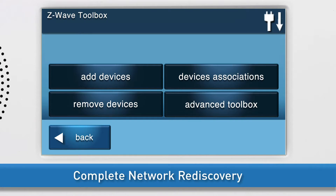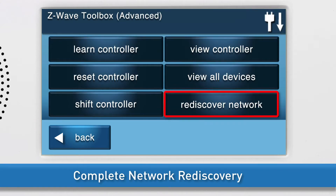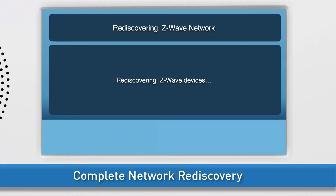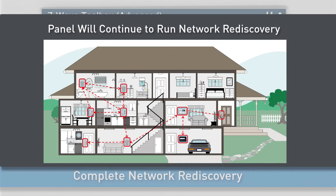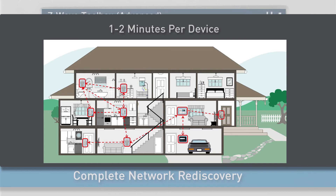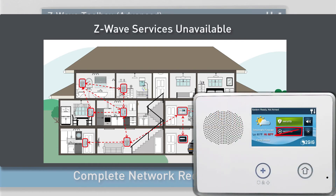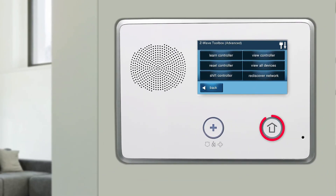To initiate a network rediscovery, navigate to the Z-Wave Toolbox, then press Advanced Toolbox. Press Rediscover Network. The panel will display a message that it is rediscovering the Z-Wave devices, then the panel will automatically redirect you back to the Advanced Z-Wave Toolbox. Note: the panel will continue to run the network rediscovery process in the background. Network rediscovery will take around 1 to 2 minutes per Z-Wave device. Z-Wave services may be unavailable until network rediscovery is complete. Press the Home button on the panel.